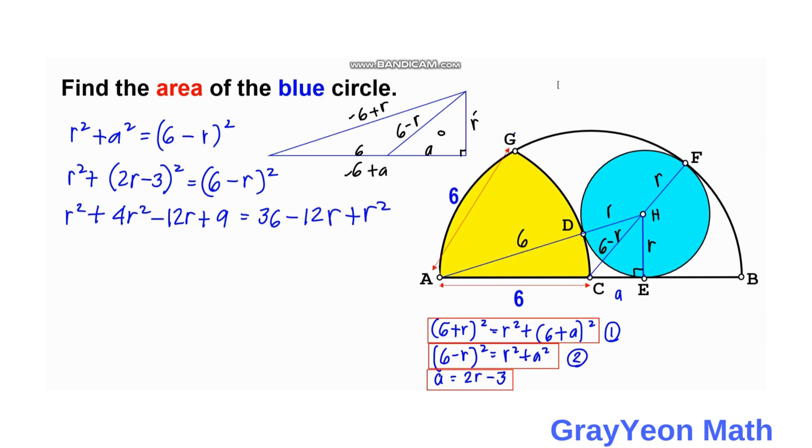So we can simply cancel this R squared and R squared, and this negative 12R and negative 12R. So we are left with 4R squared, and we need to subtract this first. 36 minus 9 is 27.